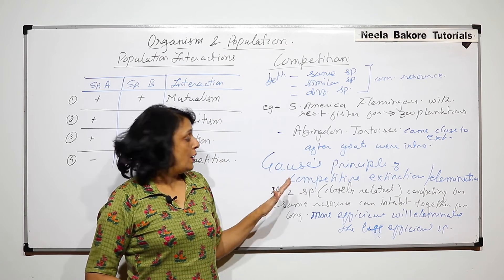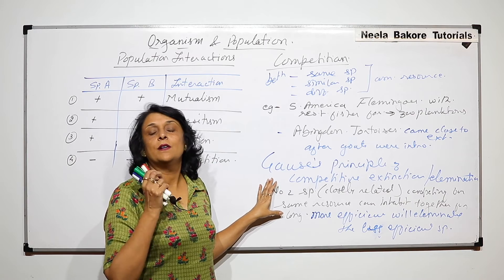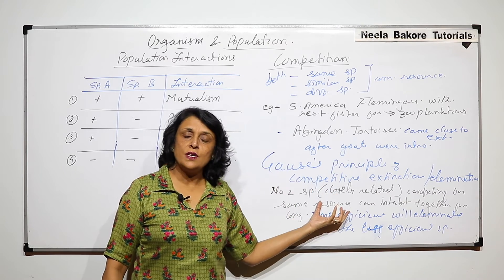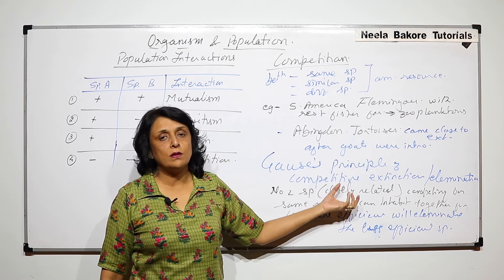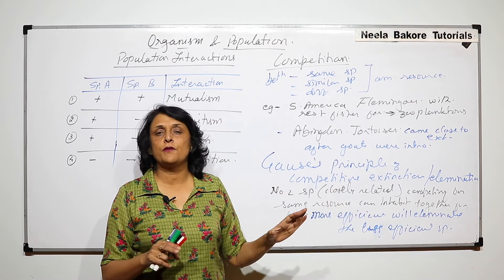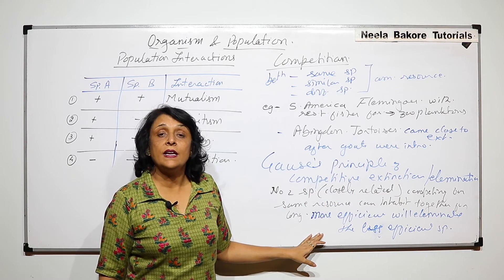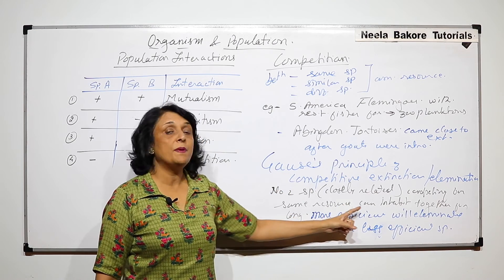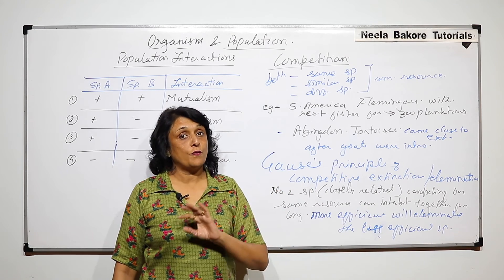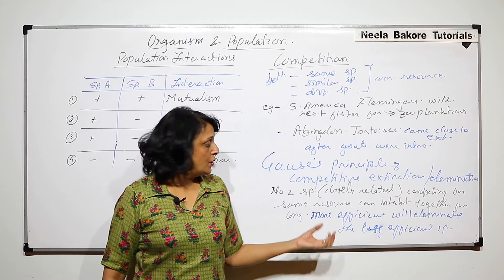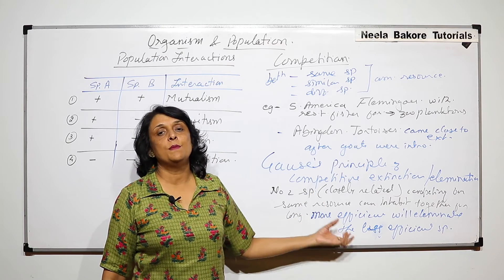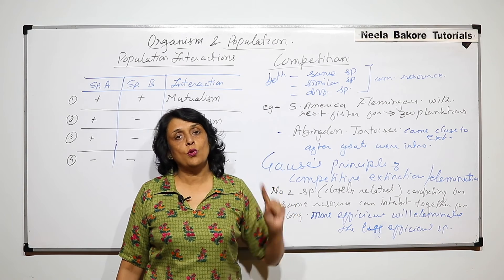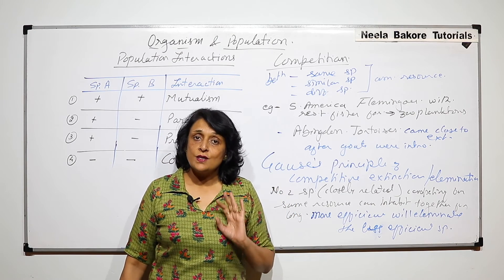So in one particular habitat, if there are two species — closely related or distinctly related — they cannot inhabit the same area if they are competing for the same resource for a very long period of time. The more efficient one will eliminate the less efficient one. It is only one species which is going to survive.